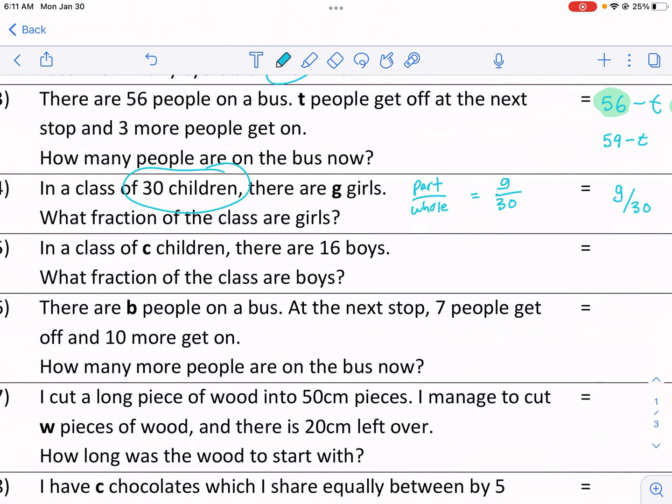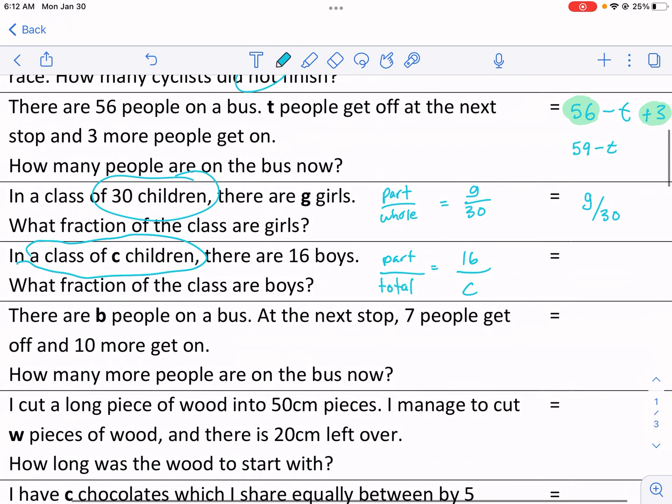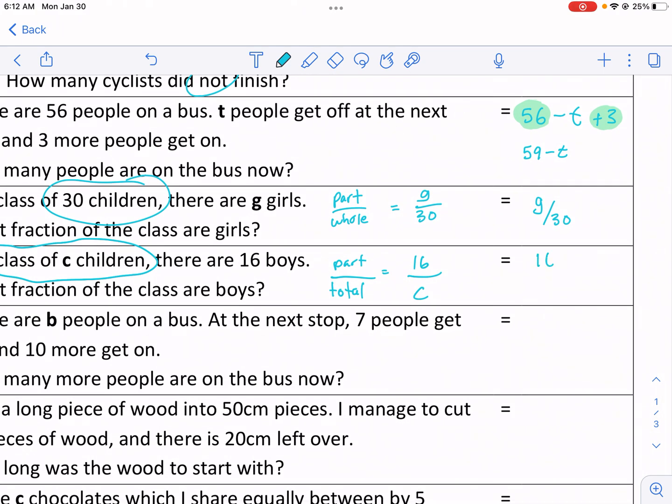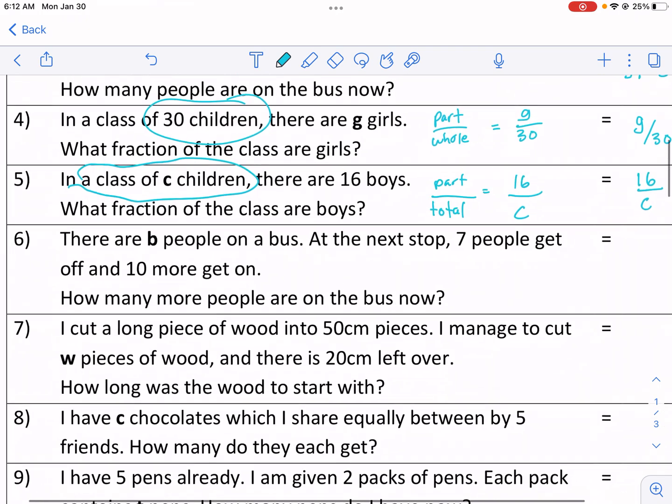In a class of C children, there are 16 boys. What fraction of the class are boys? Same thing here. The total. Oh, this one's a little bit different. This one, we're not given the total. So it says here that the total is C. So let me write this out. So I wrote it as whole above. I'm going to write it as total here. And then we have the part over the total. So our part is the boys, 16. And then our total is C because we don't know what it is. We don't know the total, but we do know that there's 16 boys. I'm guessing there's going to be more than 16, but 16 over C is going to be the portion of boys.